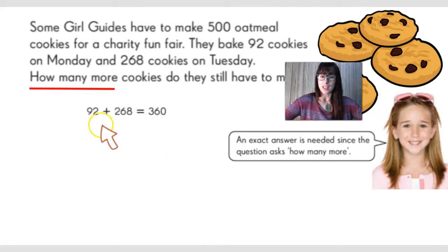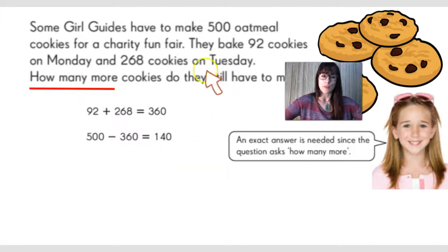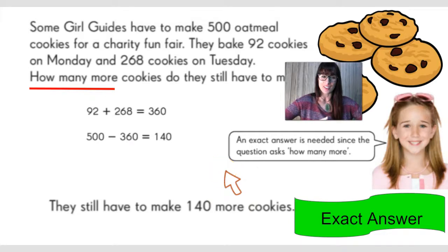We need to first add 92 plus 268 because we need to find out how many they already baked in these two days, and the total is 360. But they need to make 500 oatmeal cookies. To find out how many more they still have to make, we have to subtract that amount from 500. So 500 minus 360 equals 140. That gives us the exact answer of how many cookies they still have to make — 140 more cookies. This was a case of an exact answer, because of the question 'how many more.'